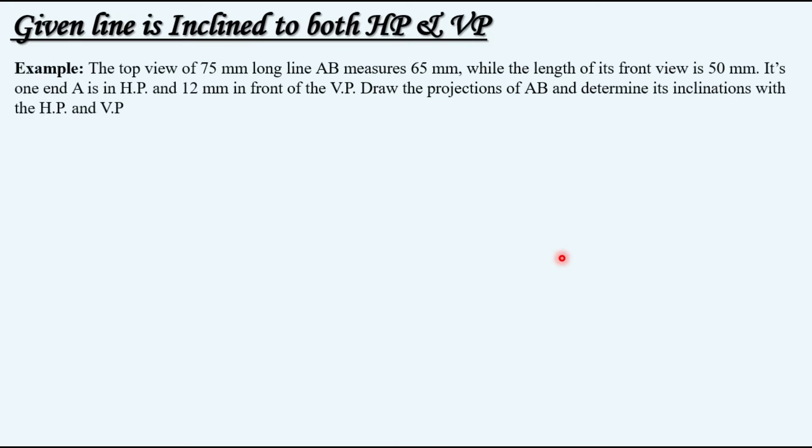Let's take an example. The question says the top view of 75 mm long line AB measures 65 mm while the length of its front view is 50 mm. Its one end A is in HP and 12 mm in front of the VP. Draw the projections of AB and determine its inclinations with HP and VP.